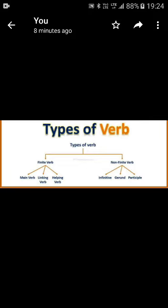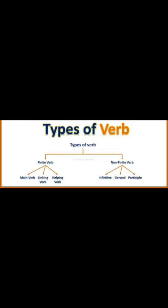Finite verbs are the actual verbs which are the roots of sentences. It is a form of a verb that is performed by or refers to a subject, uses one of the 12 tenses, and changes according to the number or person of the subject. The finite verb is again classified into three types: the main verb, the linking verb, and the helping verb.